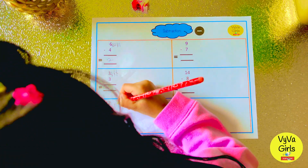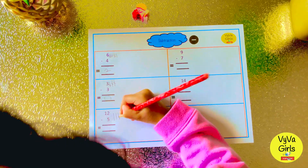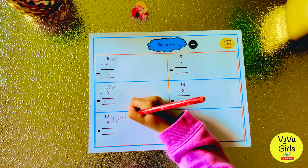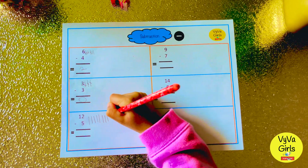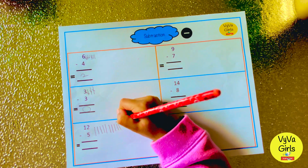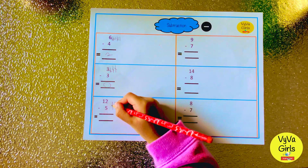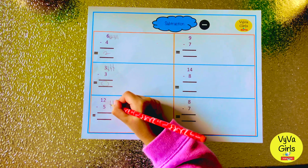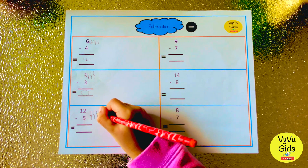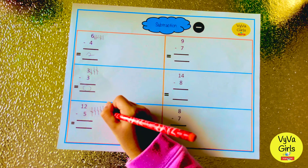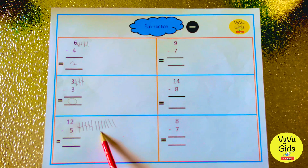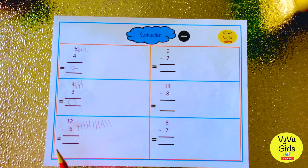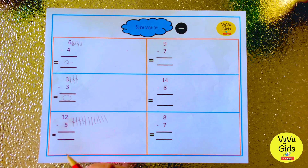1, 2, 3, 4, 5, 6, 7, 8, 9, 10, 11, 12, minus 5. You have to cut 5 lines. 1, 2, 3, 4, 5. 1, 2, 3, 4, 5, 6, 7. 12 minus 5 equals to 7.